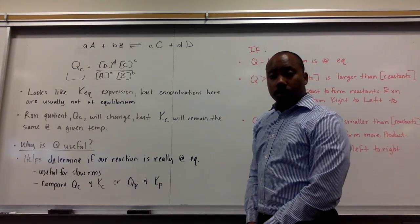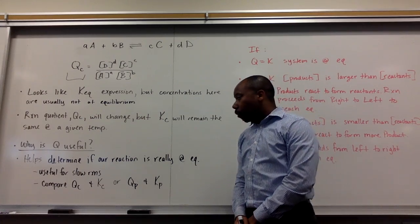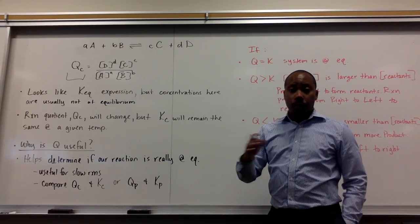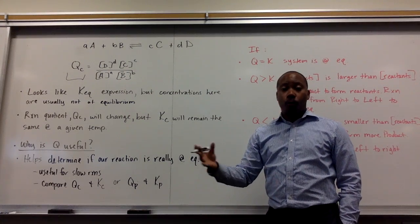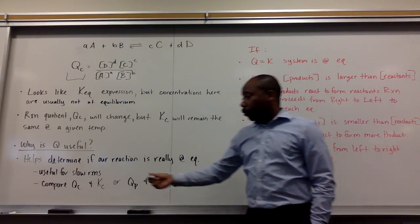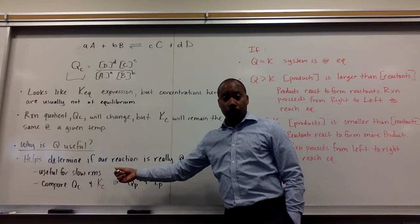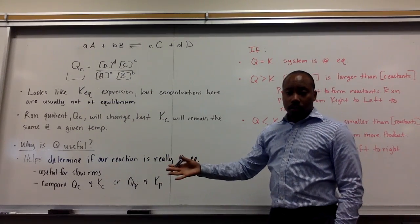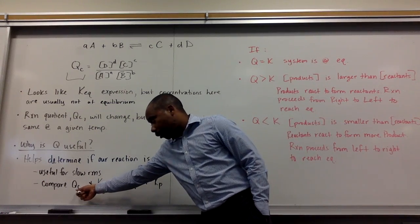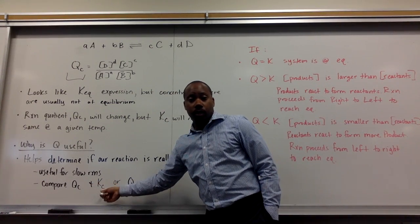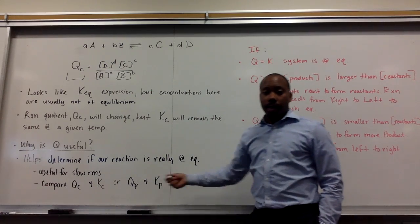Why is Q useful? Well, it helps determine if our reaction is really at equilibrium, or if we're going to have to form more products to get to equilibrium, or form more reactants to get to equilibrium. It's useful for slow reactions, because you can monitor a little better. And, it's good in comparing our reaction quotient to our equilibrium constant for concentrations, and the same for pressures.